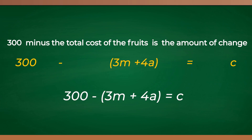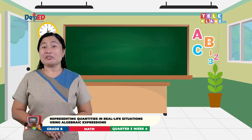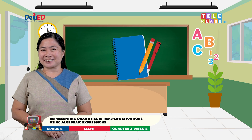Or, you are going to subtract the total cost of the fruits, 3M plus 4A, from the total amount she gave, 300, to get the amount of change. I hope you learned from our example. If you did, get your notebook and ball pen and let's try this.